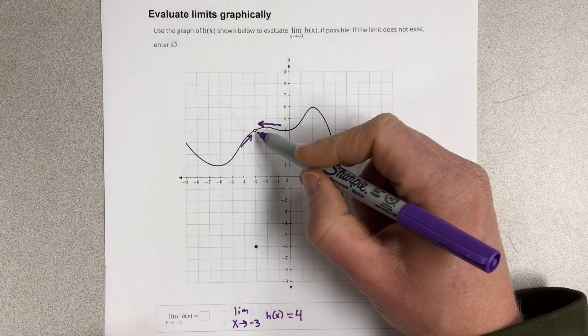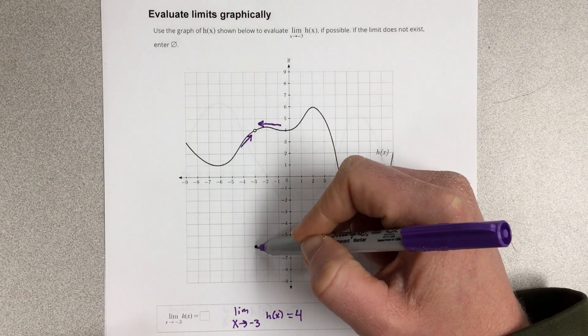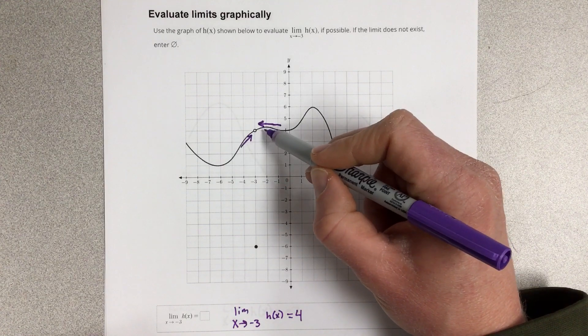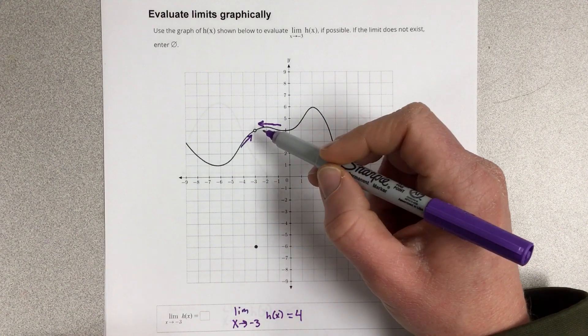Now notice that this is not the defined point for the function. The defined point for the function is negative 6. But when we evaluate limits, we're just looking at what the function is approaching as x approaches negative 3. Well it looks like it's going toward a y value of 4.